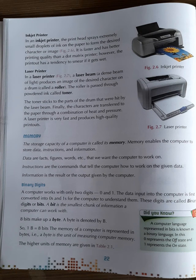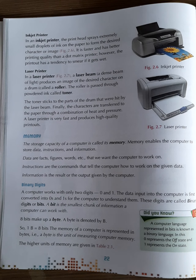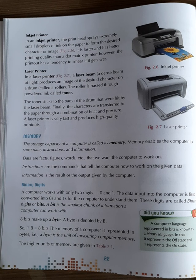Data are the facts, figures, and words. For example, roll numbers and names of students. Instructions are the commands that tell the computer how to work on given data. For example, to add the five subject marks of a student — addition is an instruction for the computer to add the five numbers. Information is the result or output given by the computer. After adding the numbers, we get the final result — that is called information.